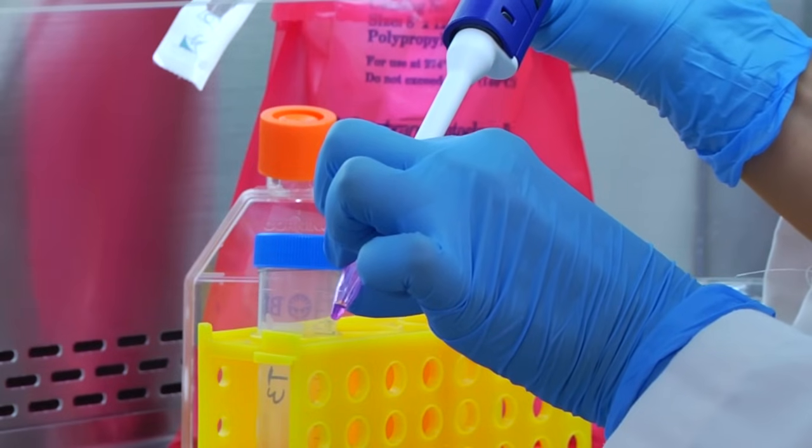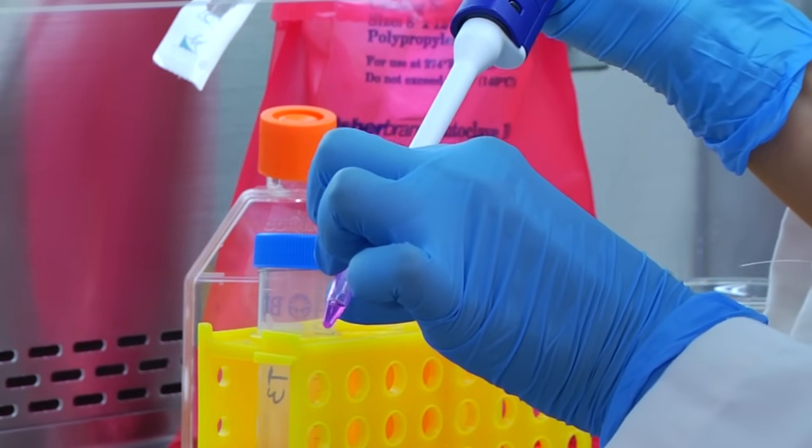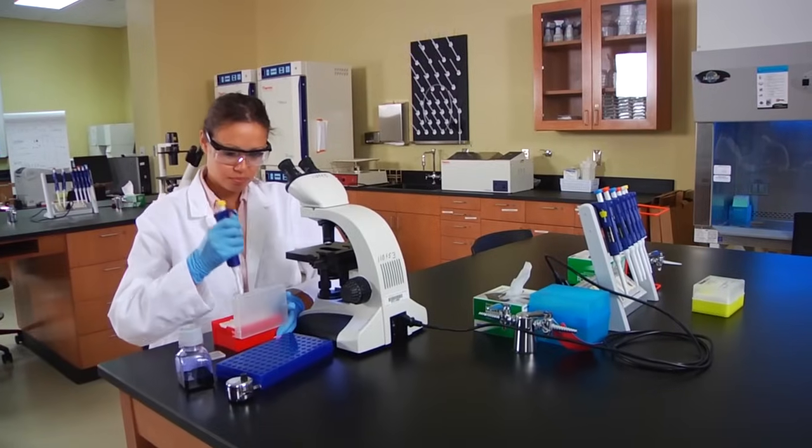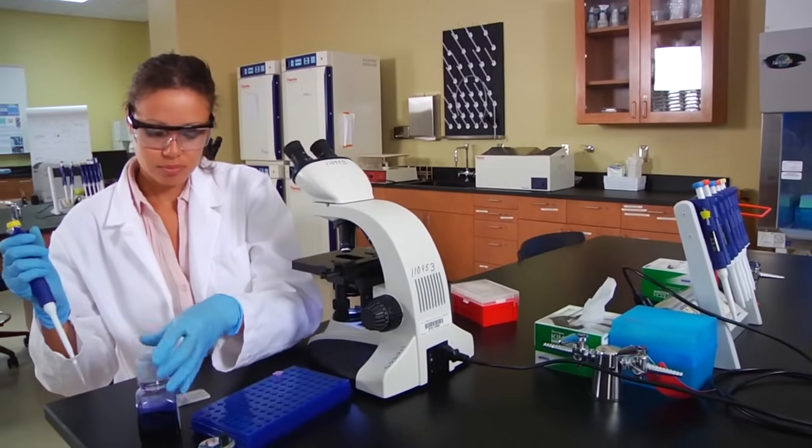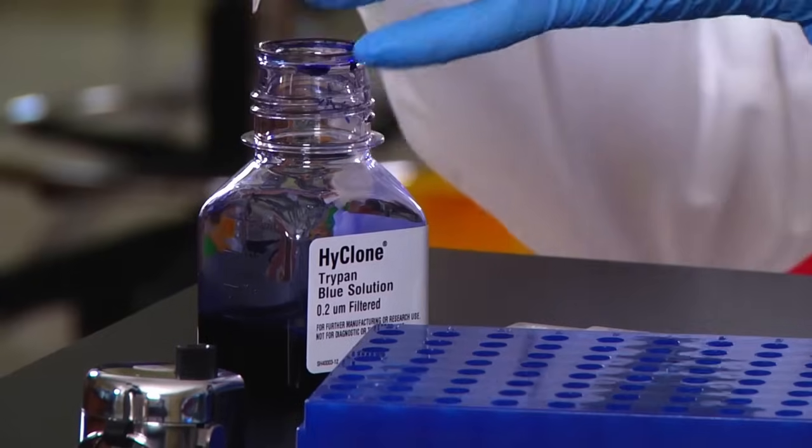We have already removed 100 microliters of our cell suspension and placed it in a microcentrifuge tube. Dilute the suspension by adding 100 microliters of Trypan Blue.